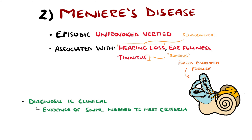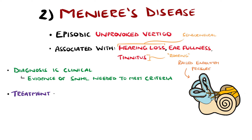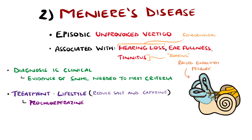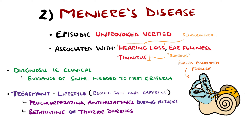Treatment involves lifestyle changes like reducing salt and caffeine intake. Medications that aid symptoms can include prochlorperazine, a dopamine antagonist, or antihistamines like cinnarizine, though extended use should be avoided due to vestibular suppression. Longer term, betahistine, a histamine H1 receptor agonist, may be of some use. Medications that may help reduce the endolymph level, like thiazide diuretics, are also sometimes used.